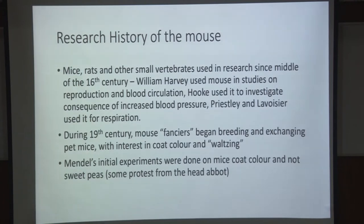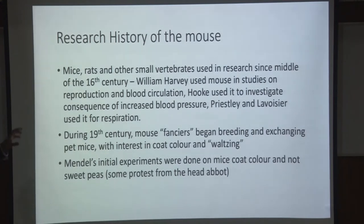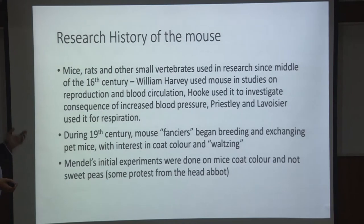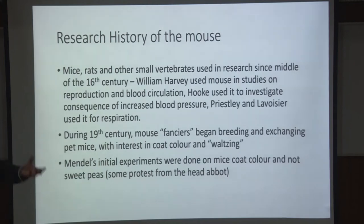Priestley and Lavoisier used mice for their studies on respiration. What really drove mouse as a model system for genetics — where mouse really excels — is that during the 19th century we got mouse fanciers. Mouse fanciers realized that inbreeding brought about characters they were quite interested in, and they began exchanging and trading these fancy mice. This culture of developing particular strains with changes in coat color or different patterns of behavior probably started in China, but Americans and Europeans adopted it too, creating centers of trade for fancy mice.